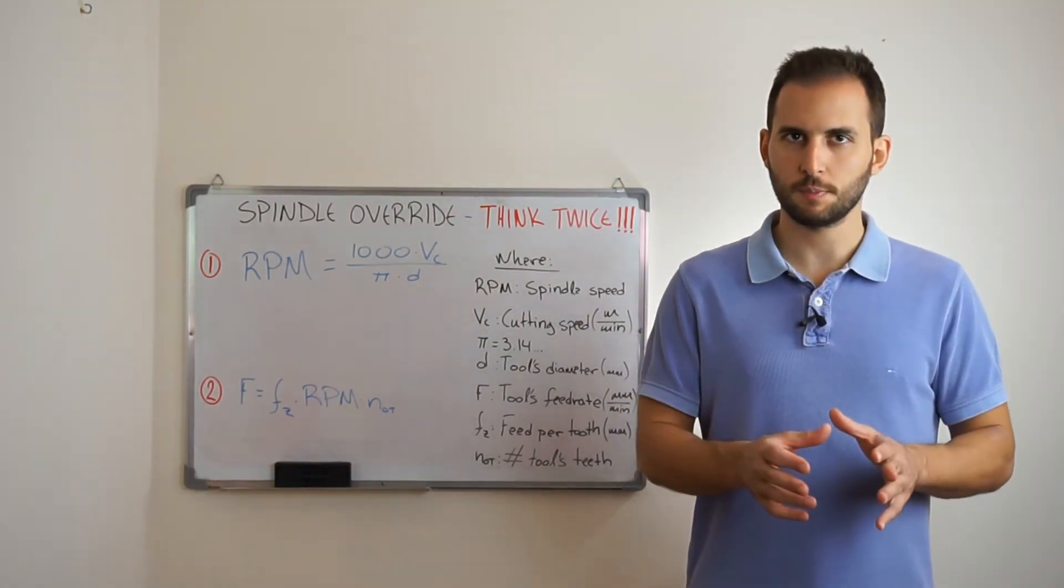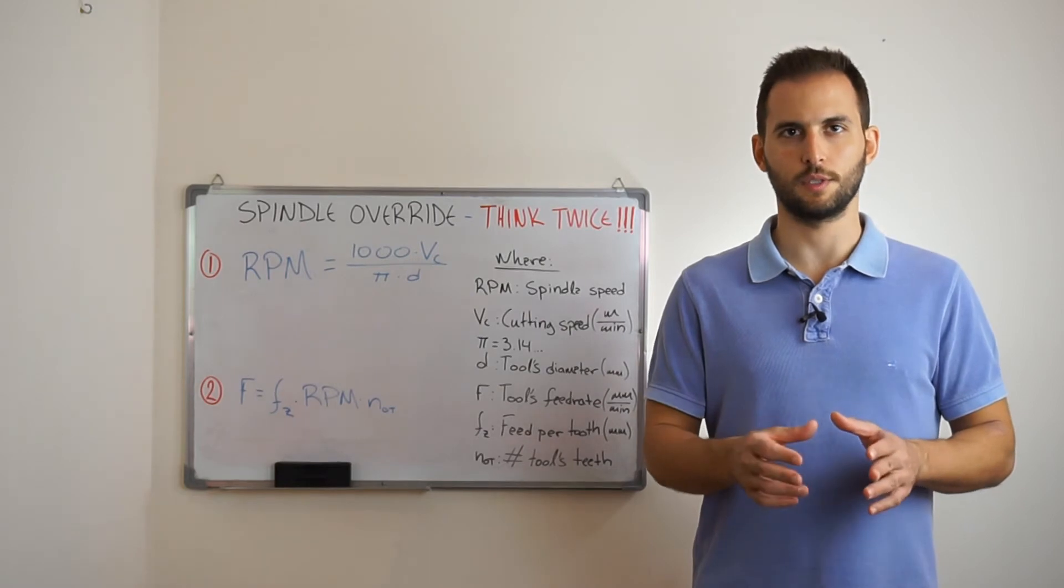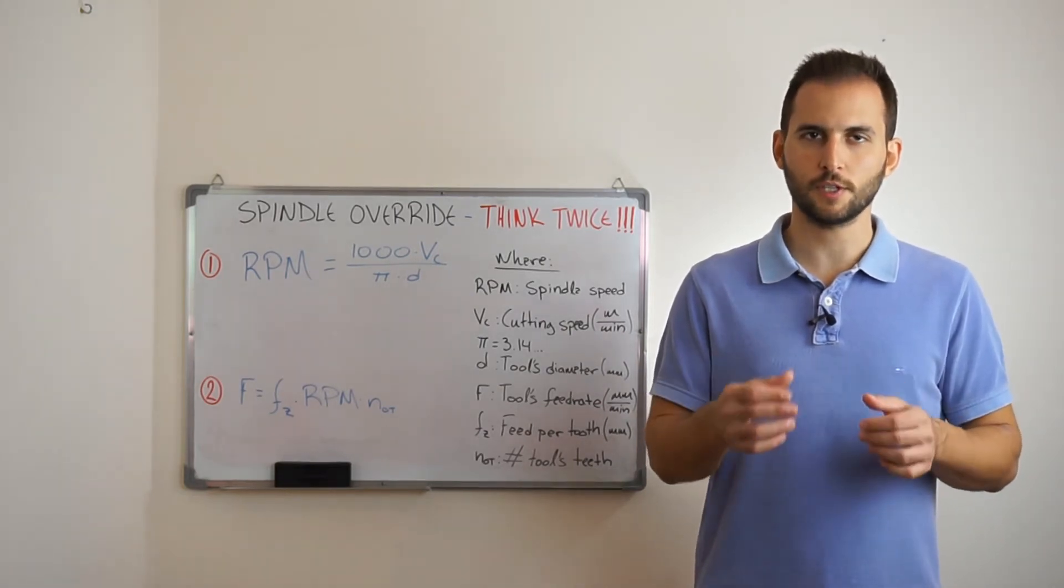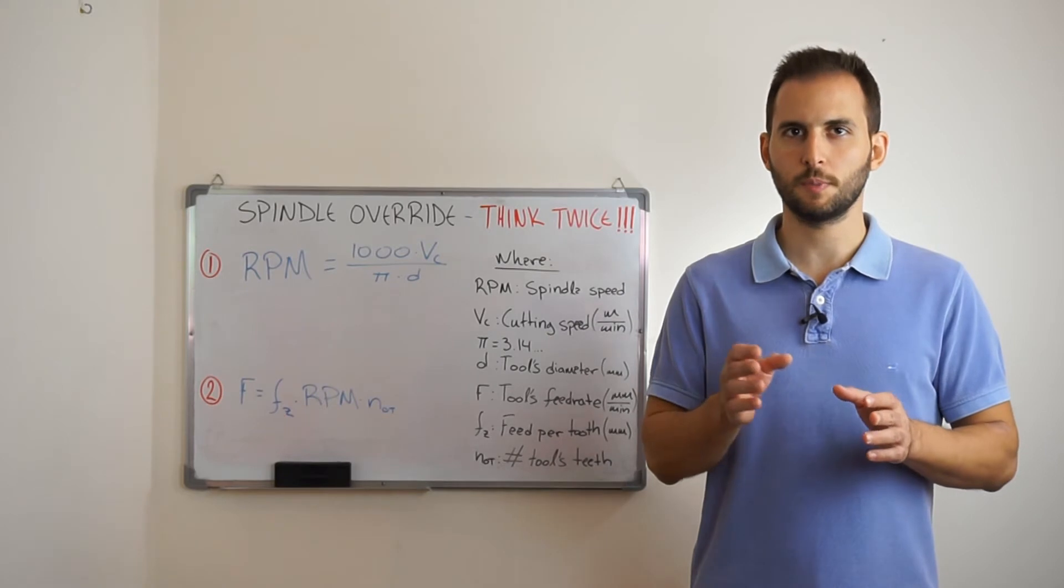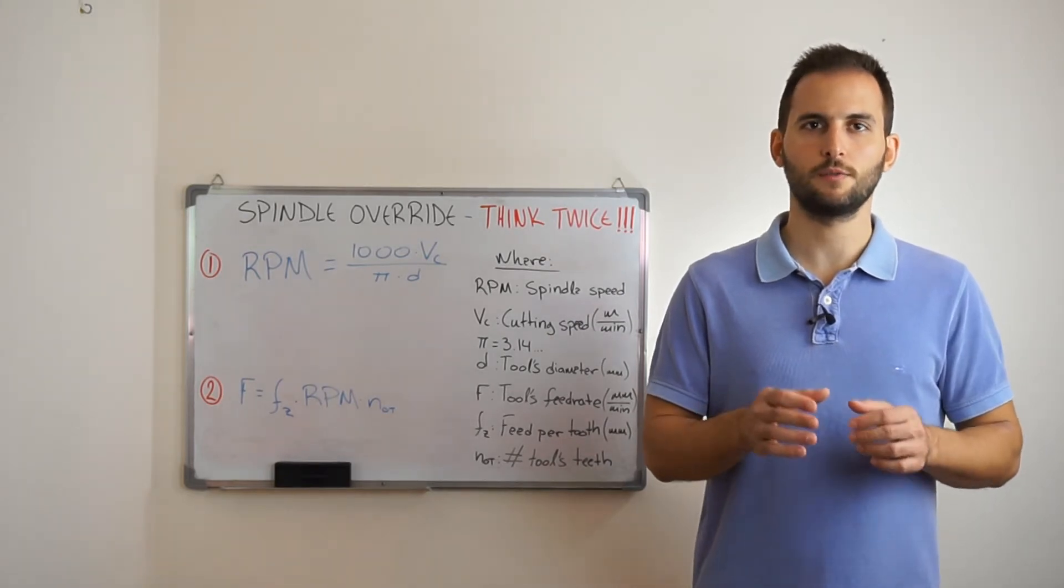On the other hand, when we decrease the spindle speed the cutting speed also decreases. But the main problem occurs due to the affection of the initial spindle speed value to the already calculated feed rate of the tool.